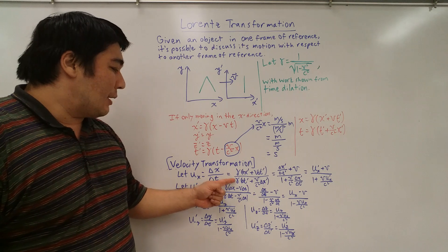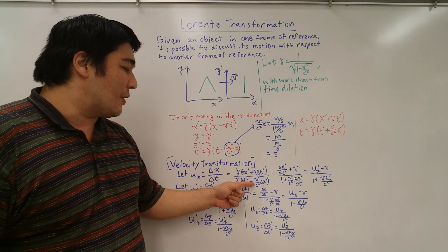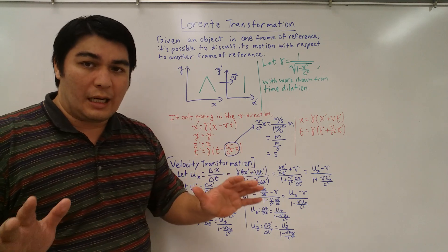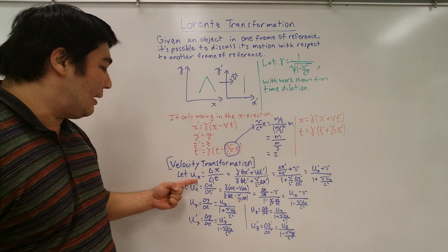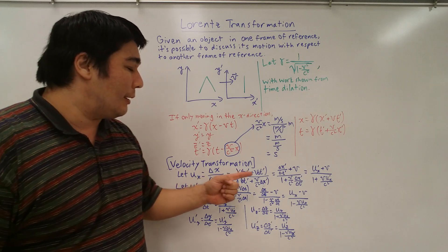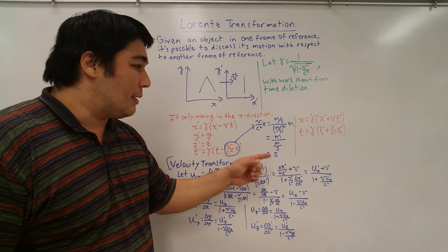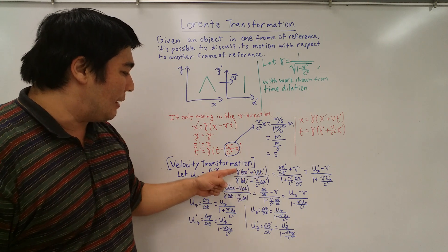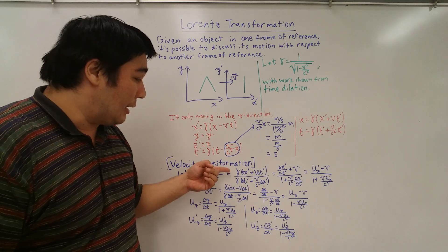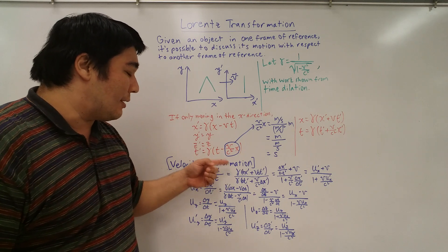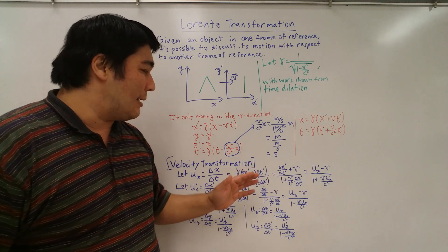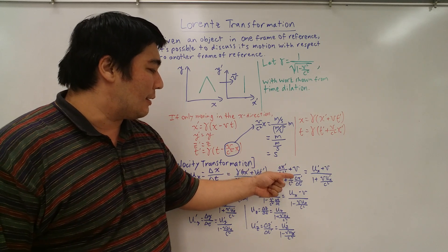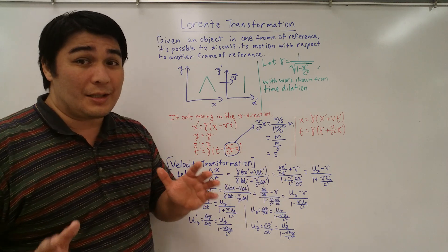We do the same substitution for delta t: gamma times (delta t-prime plus v over c squared times delta x-prime). After plugging everything in, we notice we can factor out a common factor of delta t-prime from both numerator and denominator. Once we do that, gamma and delta t-prime cancel out, leaving us with delta x-prime over delta t-prime plus v, all over one plus v over c squared times delta x-prime over delta t-prime.